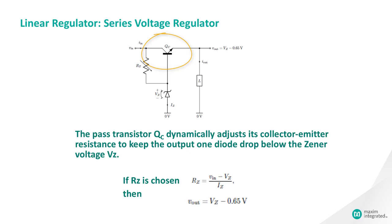The PASS transistor, QC, automatically adjusts its collector-emitter resistance to keep the output one diode drop below the Zener voltage, VZ. In other words, QC forms an NPN emitter-follower that buffers the Zener voltage.